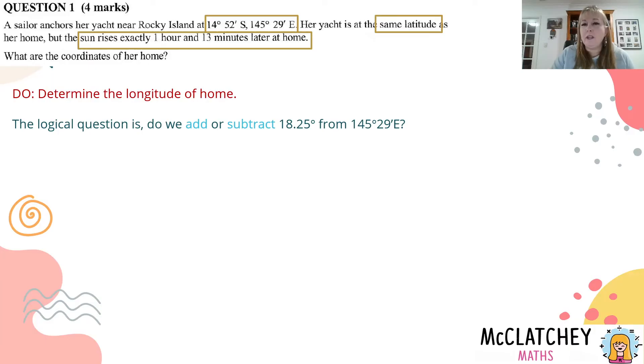The logical question we're going to ask ourselves is: we've worked out they're different by 18.25 degrees, but do we add it to the 145 degrees or do we subtract it? That can be a little bit of a logical question that we have to ask ourselves. What do I do next?